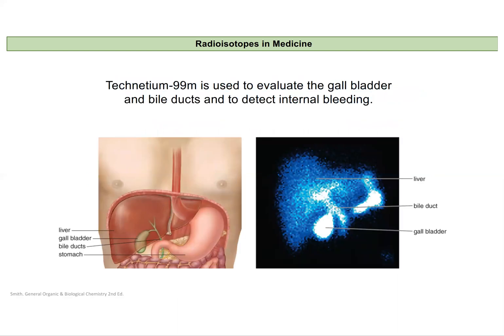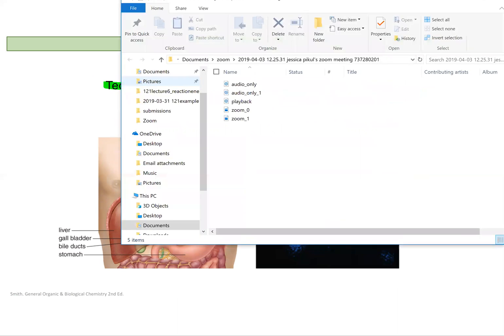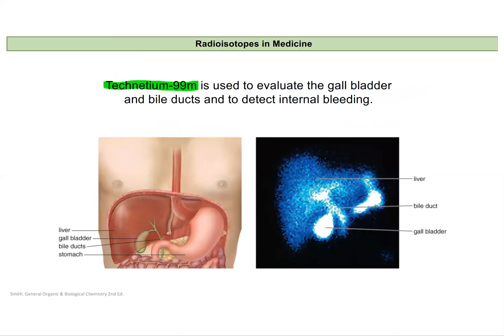Technetium-99M gives off just gamma radiation — it decays by gamma decay but stays the same element. It's useful for imaging, especially gallbladders, internal bleeding, and bile ducts. Here's an example of an image you would get using Technetium-99 imaging.